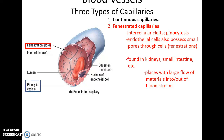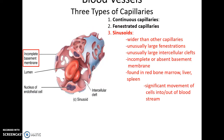Fenestrated capillaries have intercellular clefts, pinocytosis, and also small passageways through the endothelial cells themselves called fenestrations. These are found in places such as the kidneys and small intestine where there is large, frequent passage of materials into or out of the bloodstream. Capillary beds consist of 10 to 100 capillaries coming off of a single arteriole.